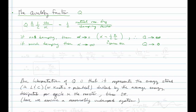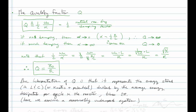Let's consider a different definition. Starting from Q equals one half omega N over alpha, we replace alpha with its definition for the series RLC circuit: one half R over L. The one halves cancel, giving omega N times L over R. Since omega N is one over the square root of LC, we get the square root of L over C, all divided by R. So an alternate definition for quality factor is the characteristic impedance divided by resistance.